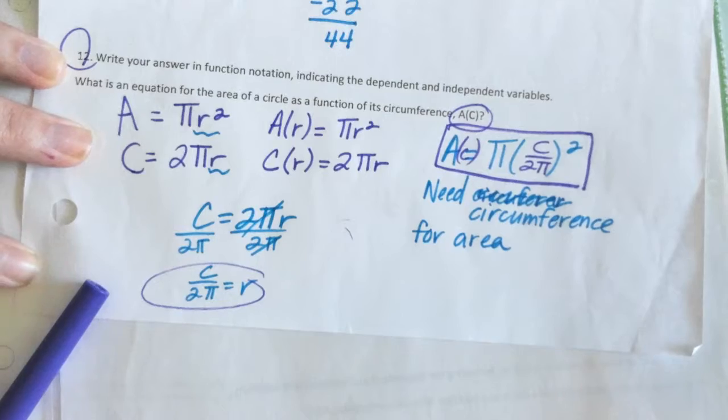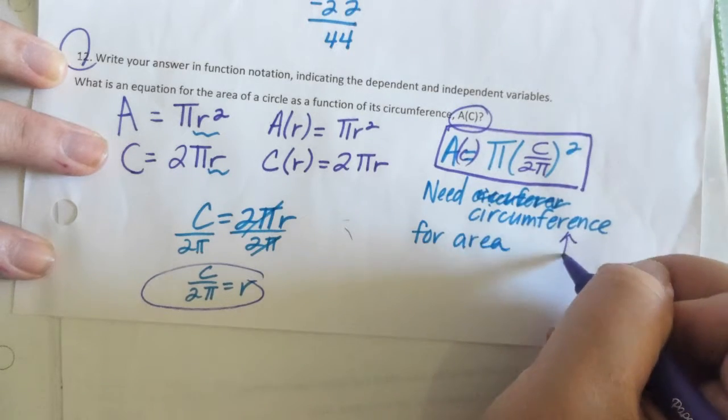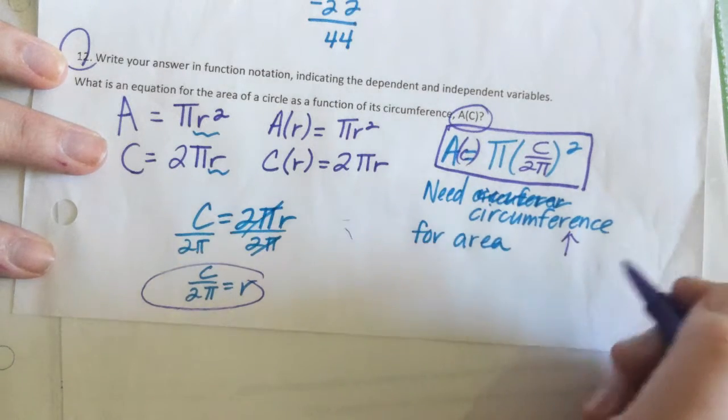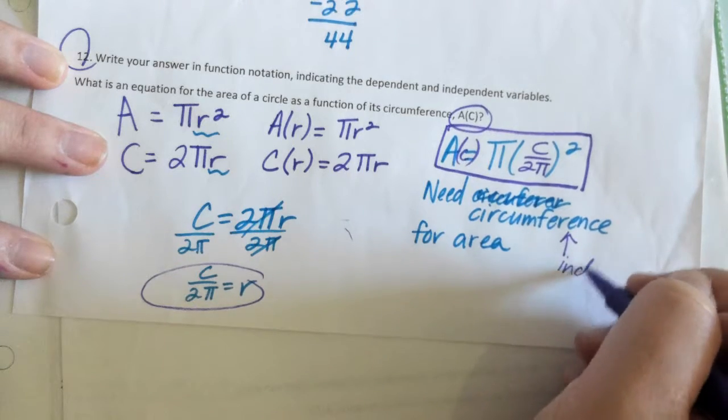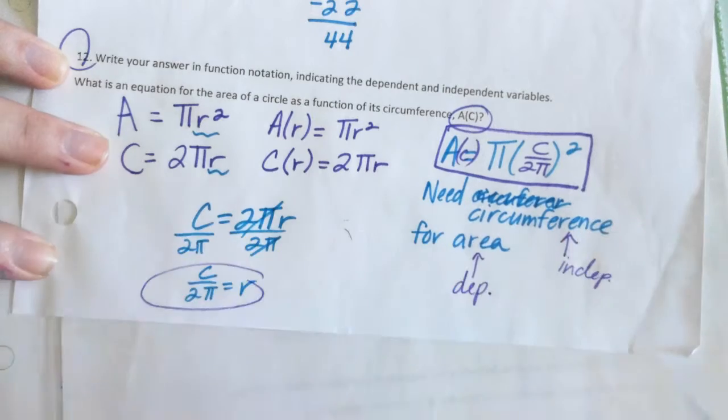You need circumference for area. So if we're labeling people independent and dependent, who's what? Circumference is the independent. And then area is dependent. And every group can have a point. Are there any questions about this?